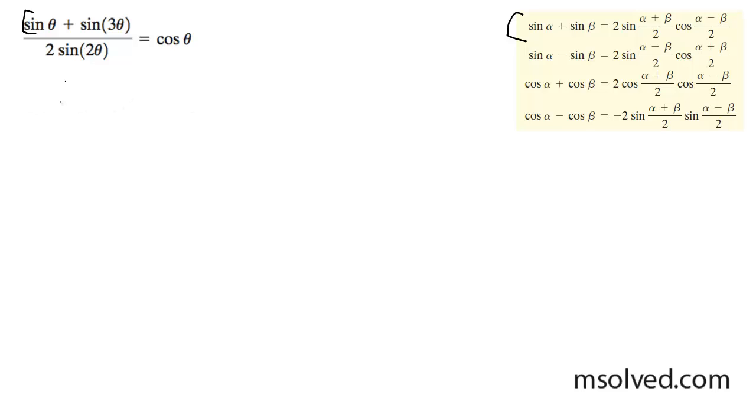So for my numerator, I'm going to go ahead and write this as 2 sine alpha - well in this case, theta plus 3 theta over 2 - times the cosine of theta minus 3 theta over 2.